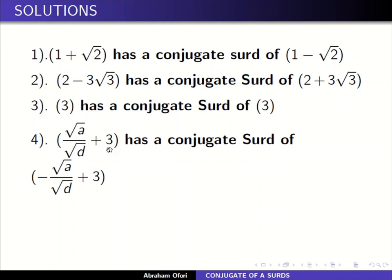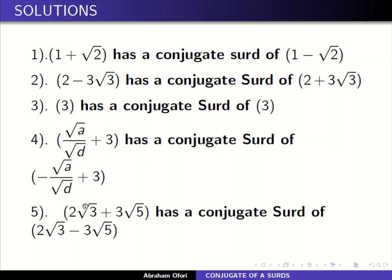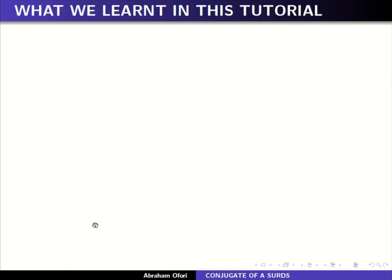For square root of a over square root of d plus three: recall from the first introduction to surds that square root of a over square root of d can be written as square root of the whole fraction a over d. So we just change the sign, giving square root of a over d minus three. And two square root of three plus three square root of five has a conjugate surd of two square root of three minus three square root of five.